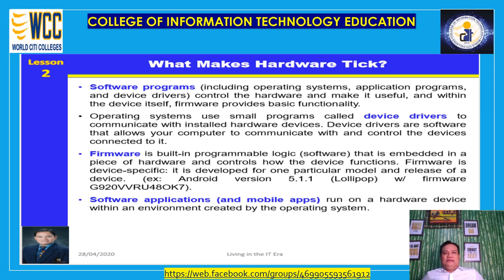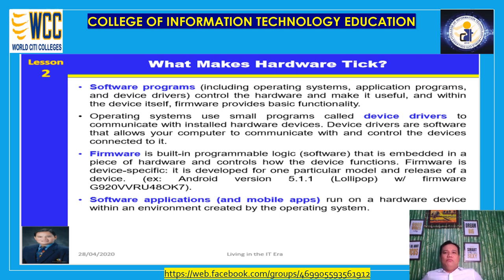Firmware is built-in programmable logic or software that is embedded in a piece of hardware and controls how the device functions. Because firmware is device-specific, it is developed for one particular model and release of a device. The firmware on a smartphone, for example, is the code needed to control the phone hardware itself and run the base operating system. Firmware is separate from the operating system. For example, you may be running Android version 5.1.1 (Lollipop) as the mobile operating system on your phone, while running a specific firmware build number such as G920VVRU480K7.